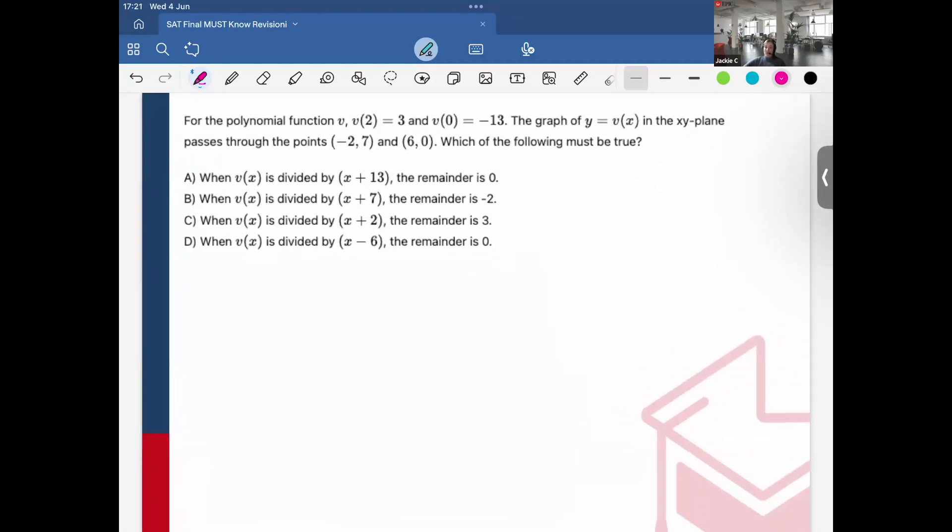Okay, so here we have the polynomial function v. We have v(2) equals 3, and v(0) is equal to negative 13. The graph of y equals v(x), and the xy plane passes through the points (negative 2, 7) and (6, 0), which of the following must be true.